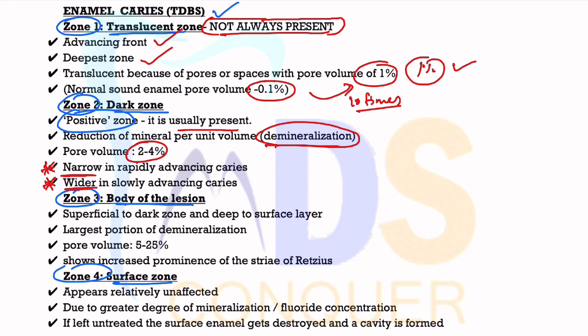The third zone is called the Body of the Lesion. It is present superficial to the Dark Zone and deep to the Surface Zone. There is a large portion of demineralization compared to the Dark Zone, and the portion of remineralization is also high compared to the Dark Zone. The pore volume is very high in the case of the Body of the Lesion.